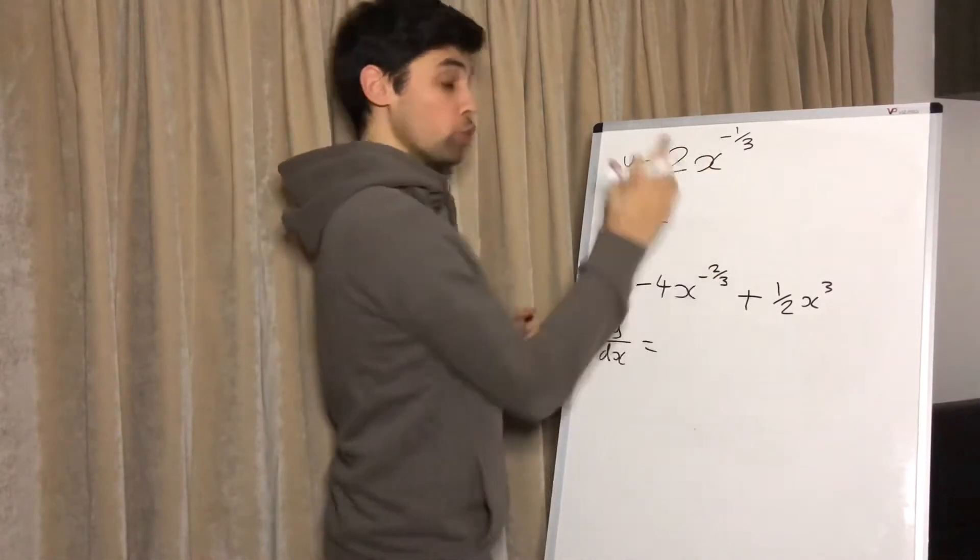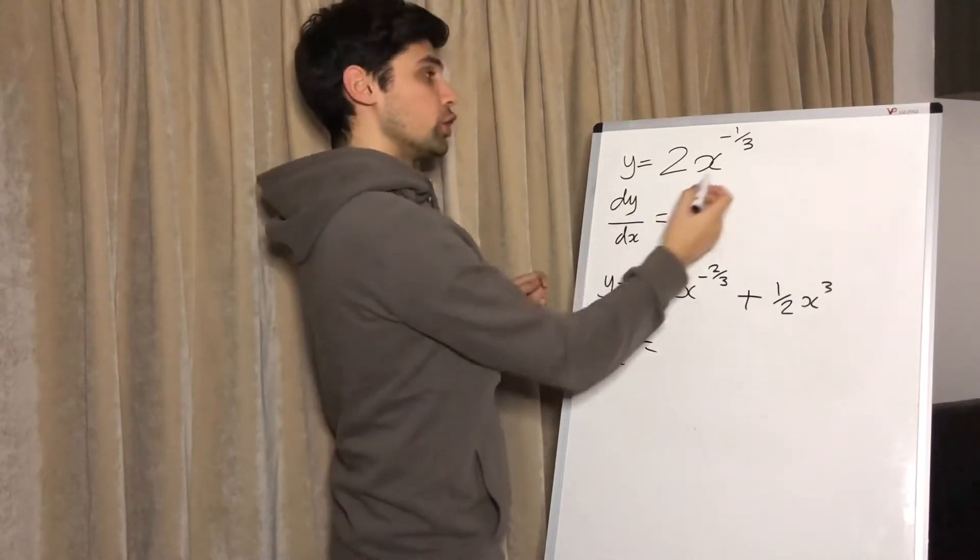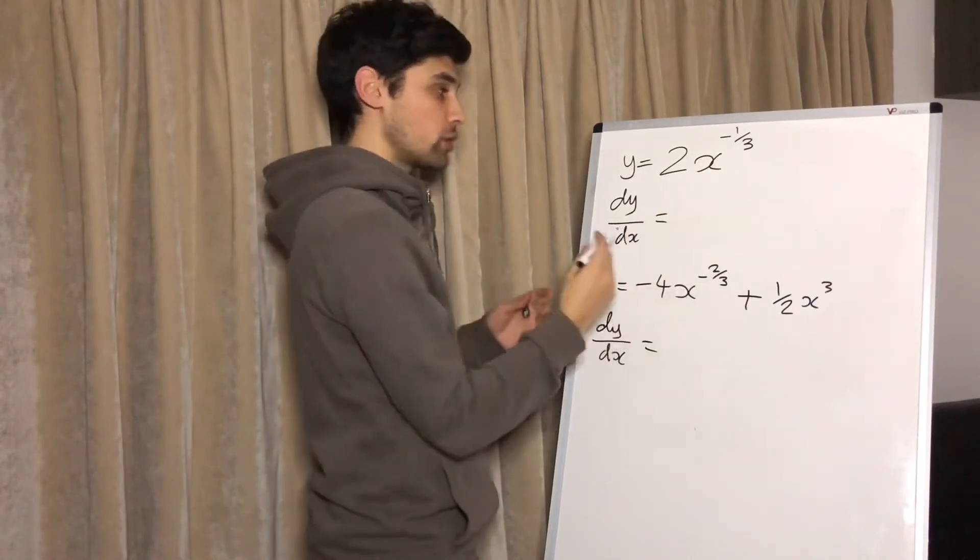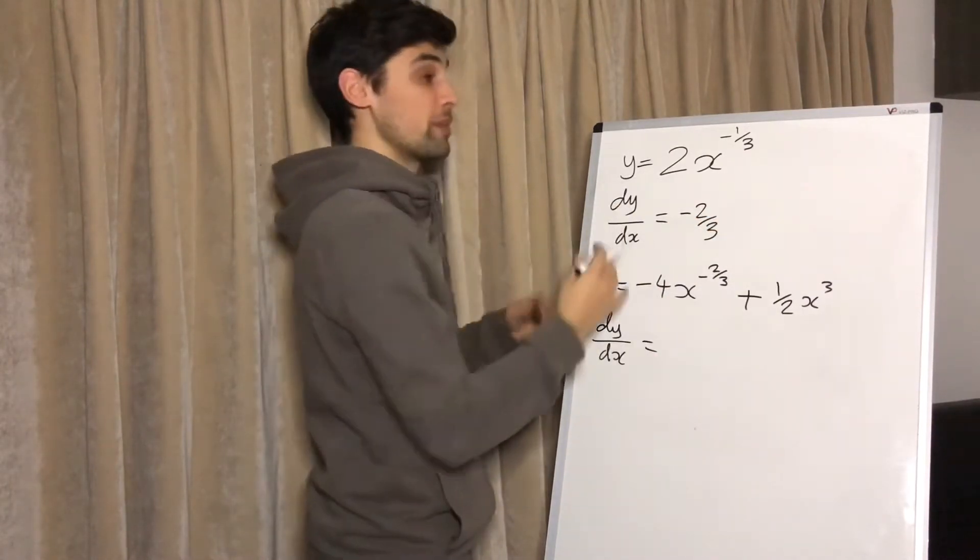The rule for differentiating is: bring the power down in front, minus one from the power. So minus a third comes down to create minus two thirds. Two times a third is two thirds, so two times minus a third is minus two thirds.